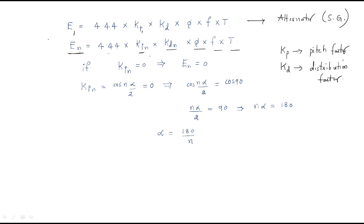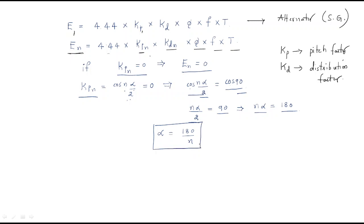If I want to remove the nth harmonic EMF, I set En = 0. Since kdn is the distribution factor, I make the nth pitch factor kpn = 0, which makes the induced EMF completely zero. The formula kpn = cos(n·α/2) = 0, and cos 90° = 0, so n·α/2 = 90°, giving n·α = 180°.